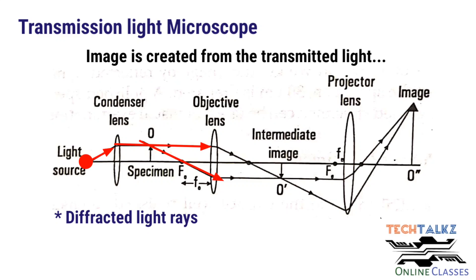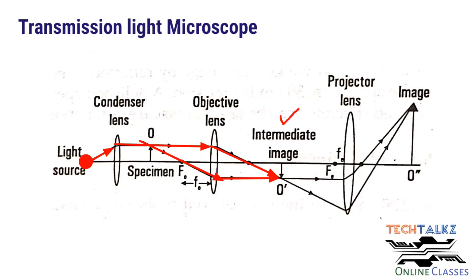That means they are diffracted with a phase change of 180 degrees. Then this objective lens will collect these waves and focus onto this point. The interference of these two waves gives an image at this point. And this is called the intermediate image.